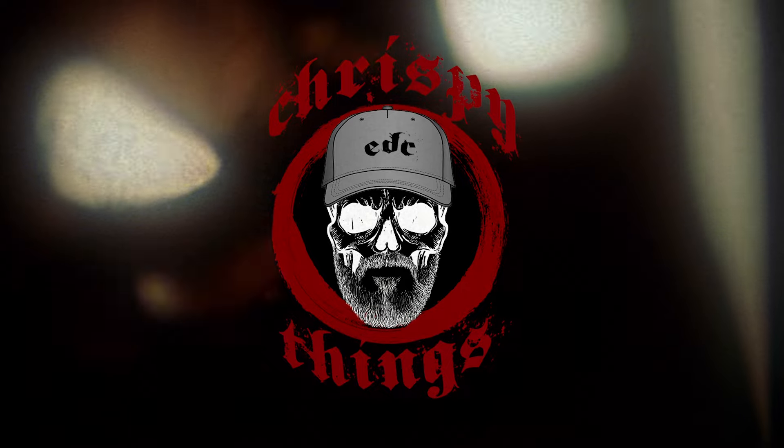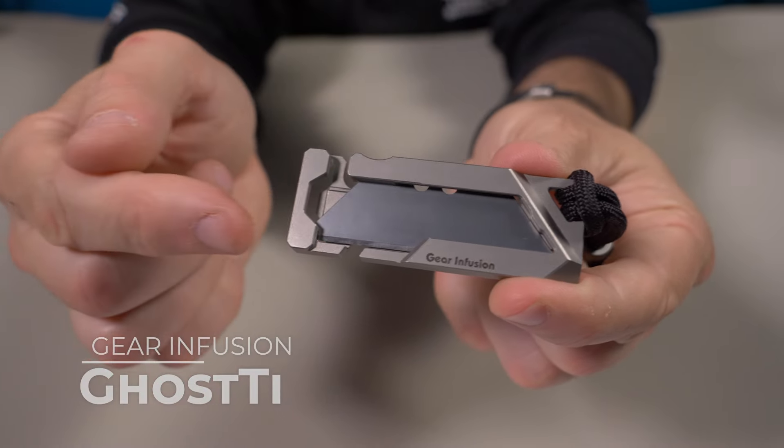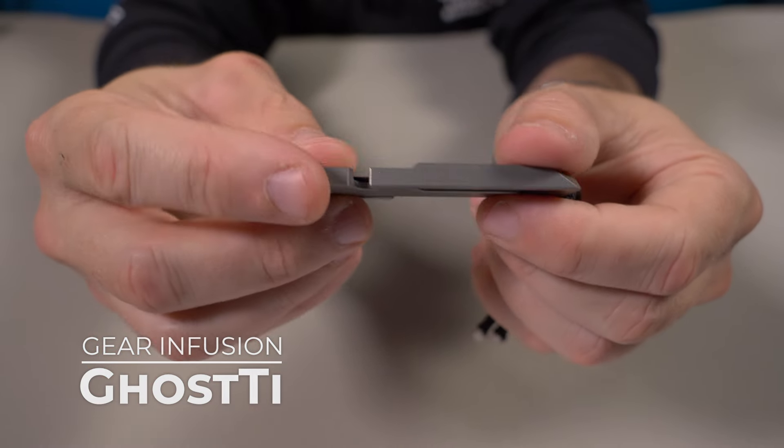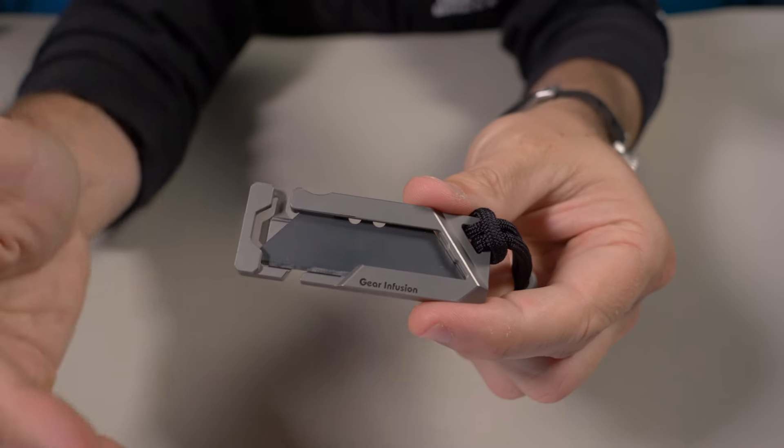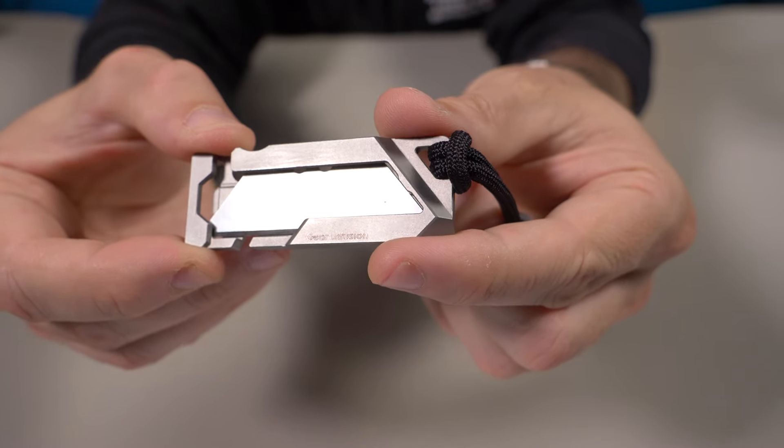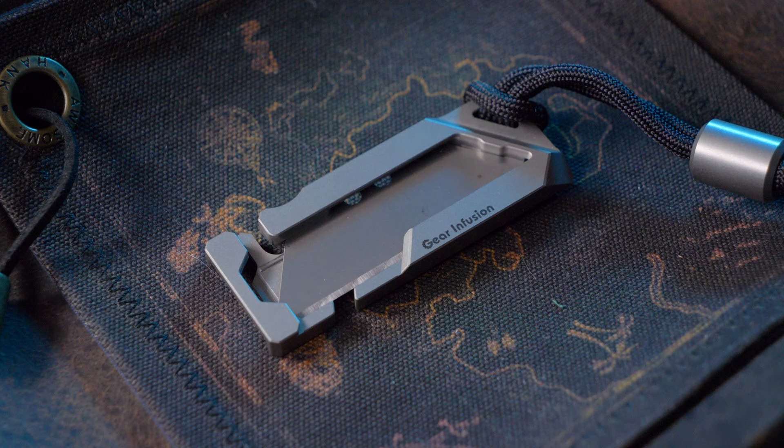That's right, and this one in particular is the Gear Infusion Ghost Ti. It's so small and compact, it's just slightly larger than the actual razor blade itself. If you're into everyday carry utility knives and you're looking to slim down your pockets, look no further than this guy right here.